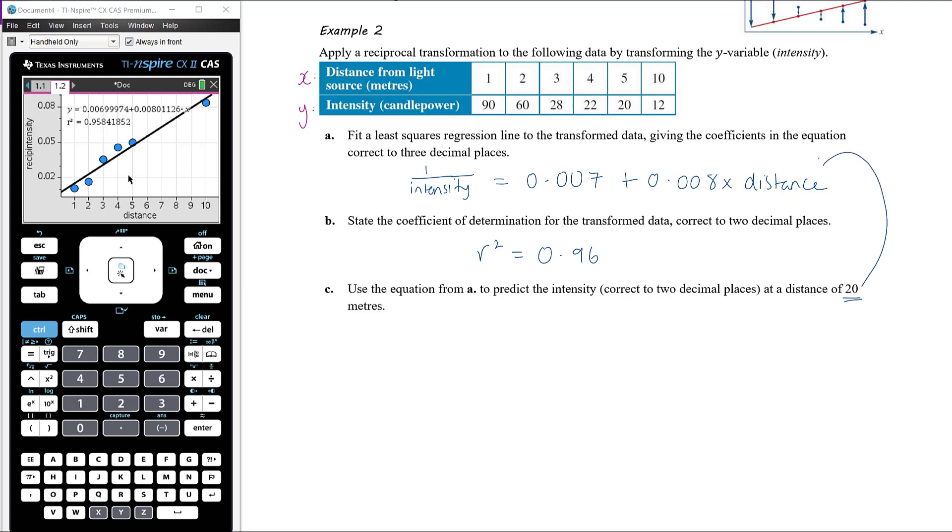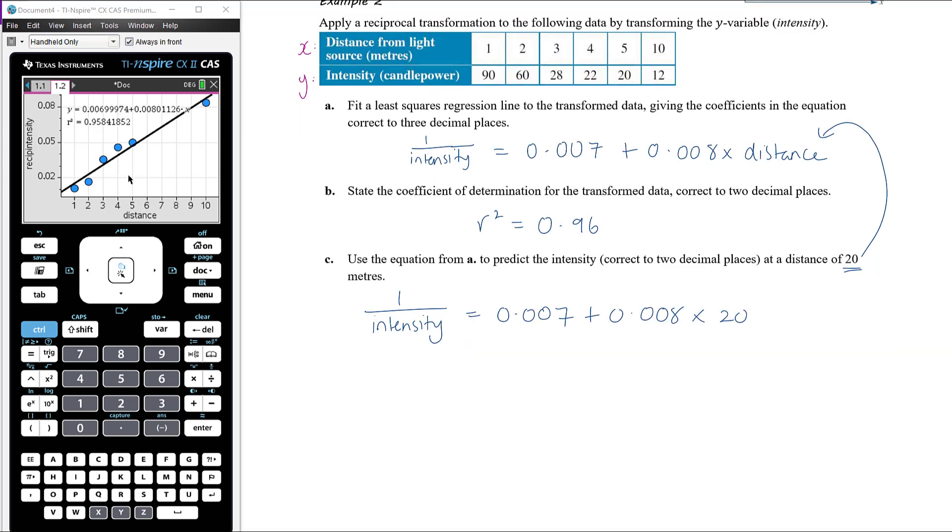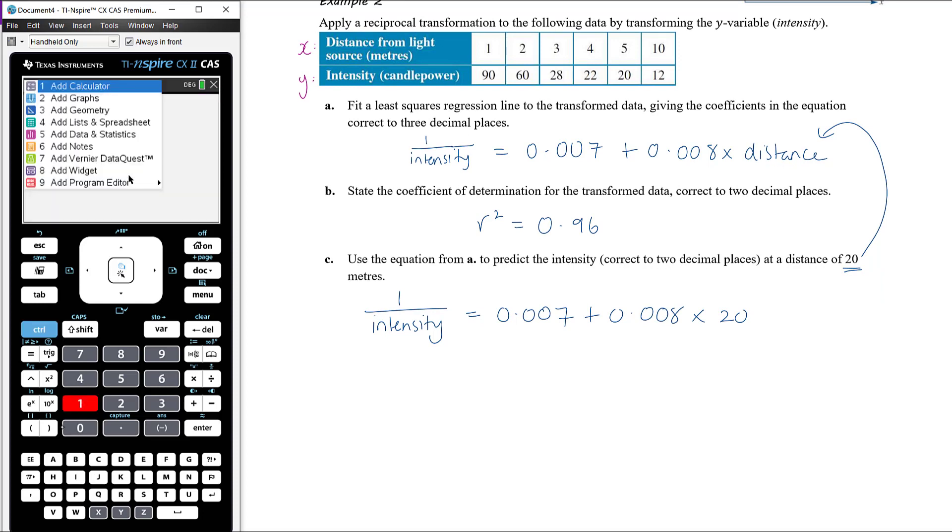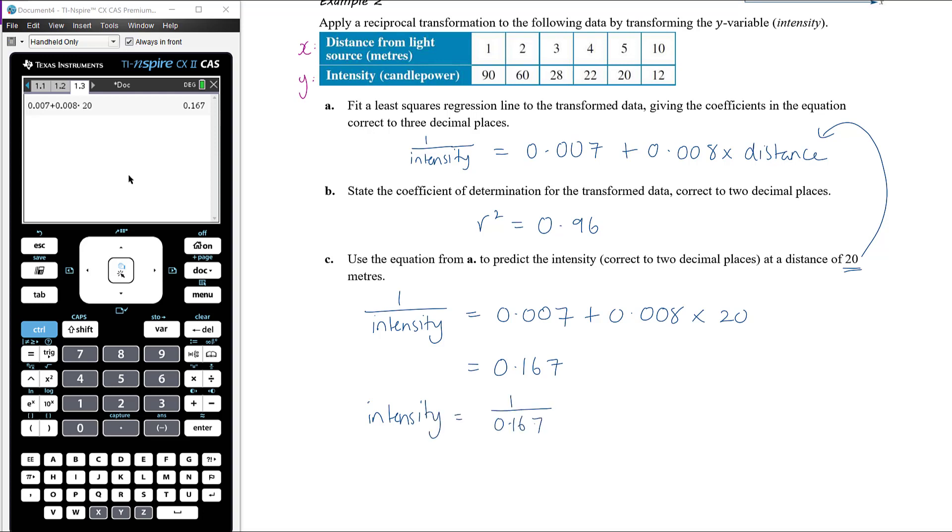Use the equation from a to predict the intensity correct to two decimal places at a distance of 20 meters. Distance of 20, we want to sub that into our equation up here. So we know that 1 over the intensity is equal to 0.007 plus 0.008 times 20. Now, like the previous video where we did the log transformation, you could work that right hand side of the equation out. So 0.007 plus 0.008 times 20, and so 1 over the intensity is 0.167. Then you can either manipulate that yourself. We now know that this means that the intensity is going to be 1 over 0.167, which will be 1 divided by that, 5.99 to two decimal places.